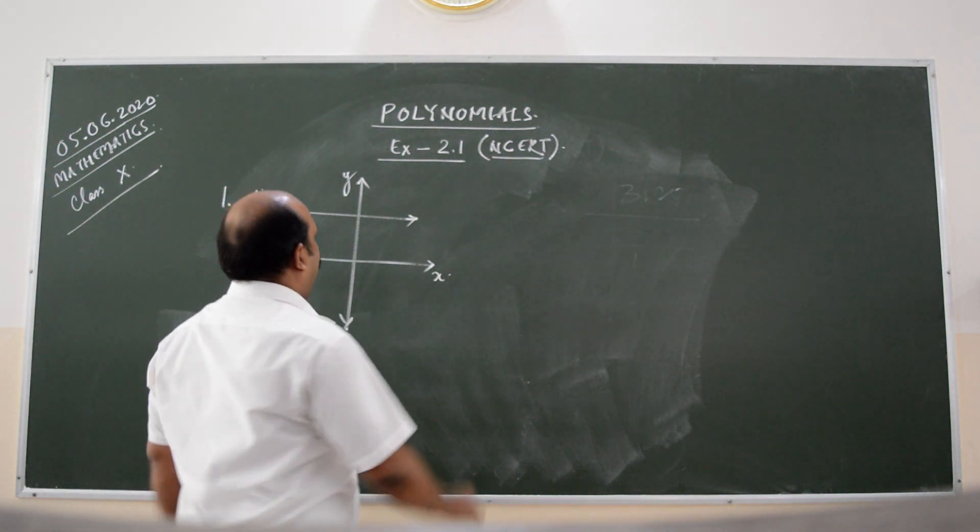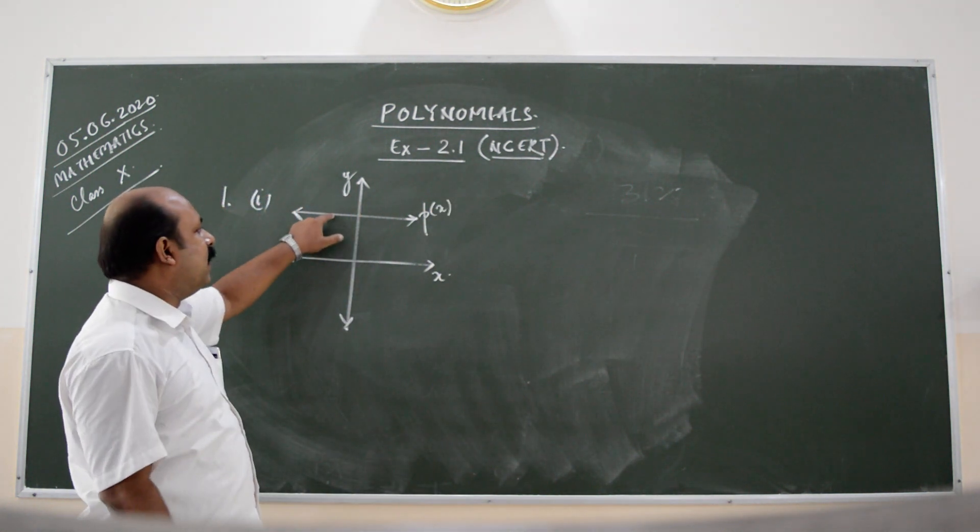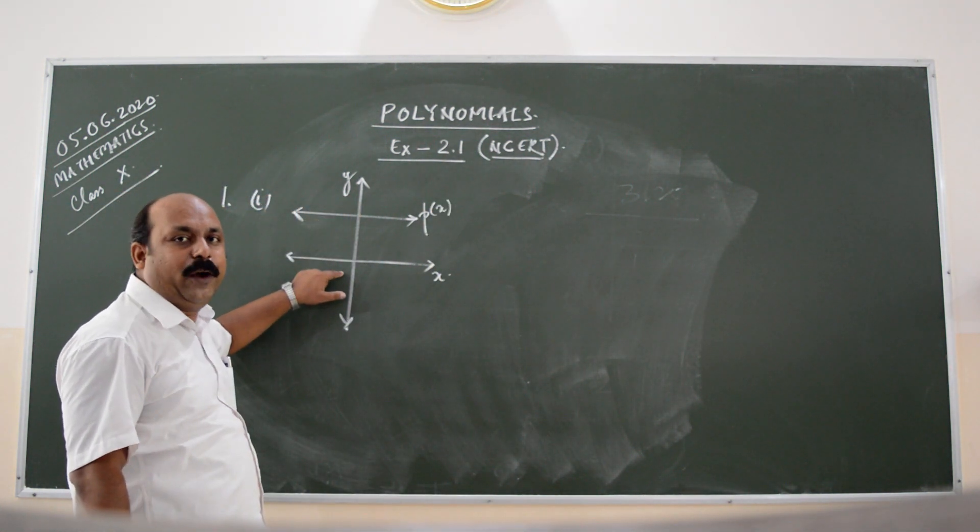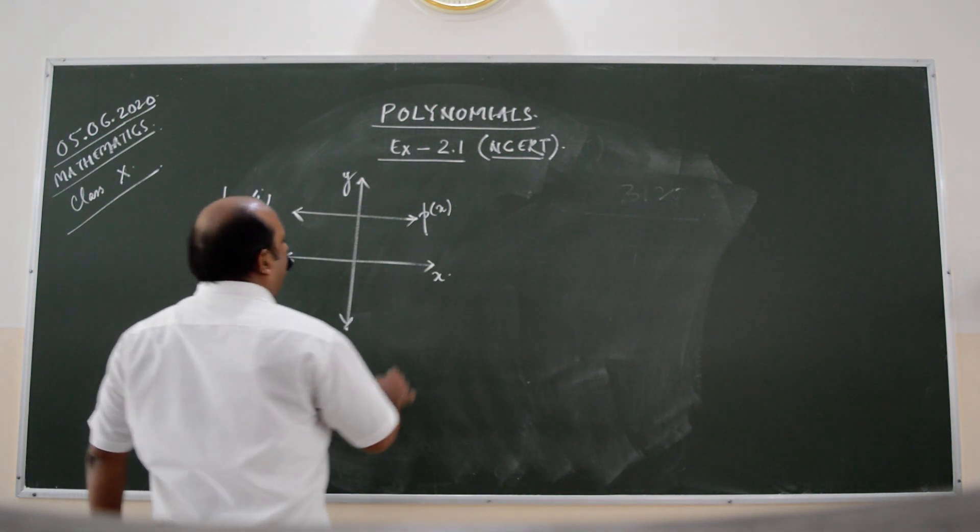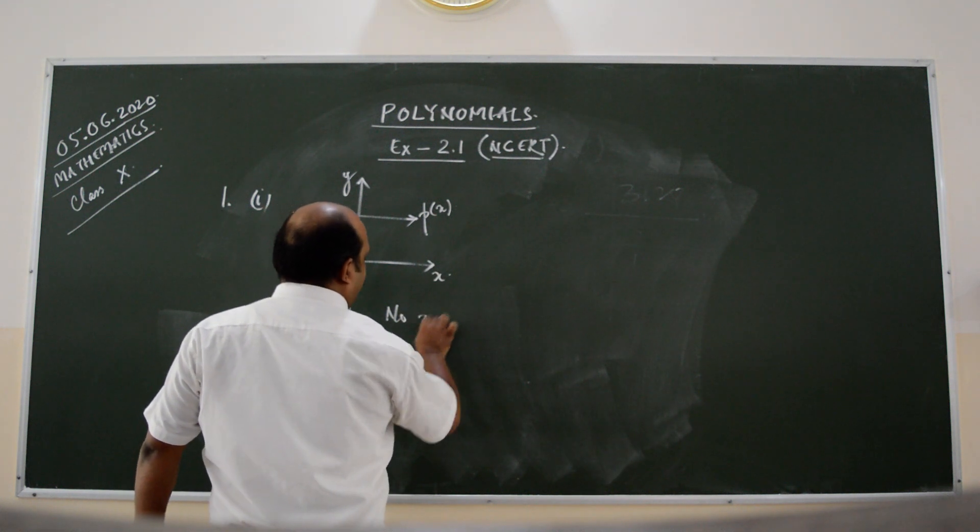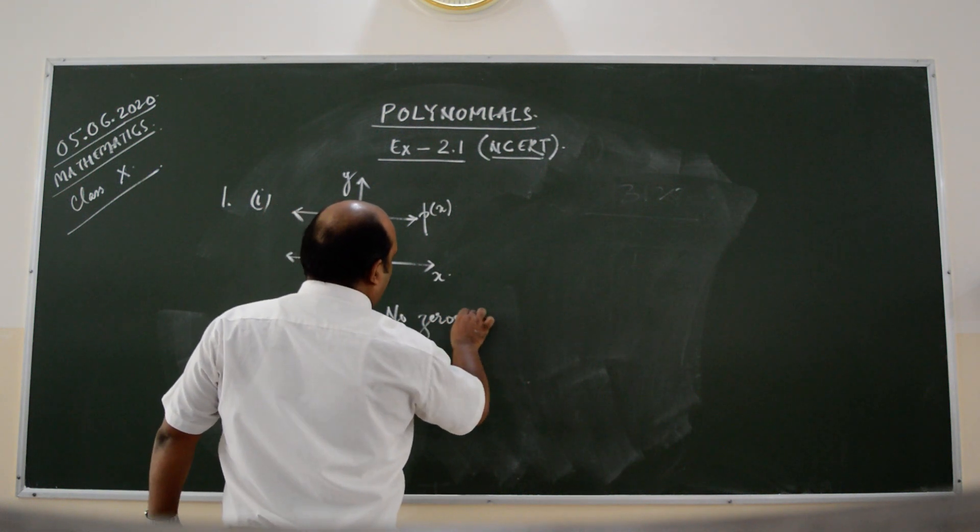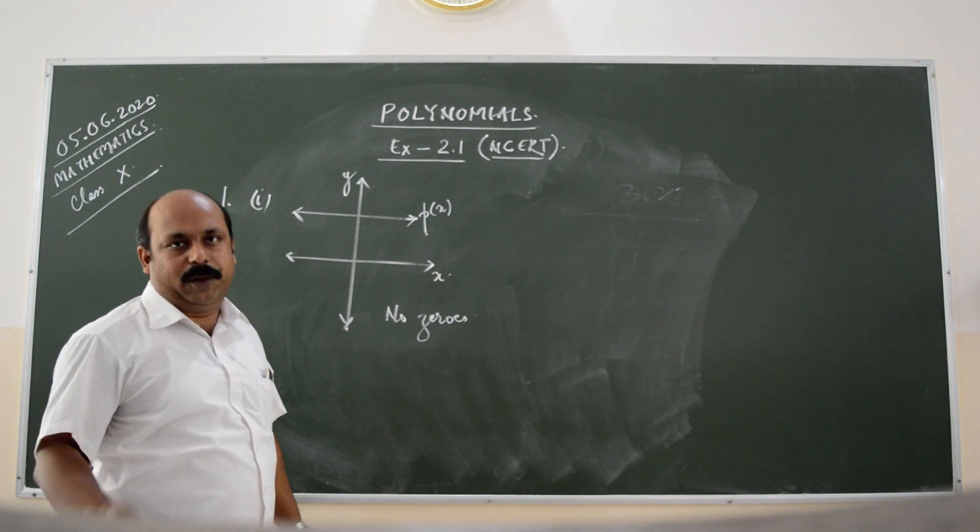Now, can you see this graph? Let us say this is the graph of p of x. Is it intercepting the x axis at some certain point? Certainly not. This graph will have no zeros. It means p of x will have no zeros, or we can say the number of zeros of p of x will be zero.